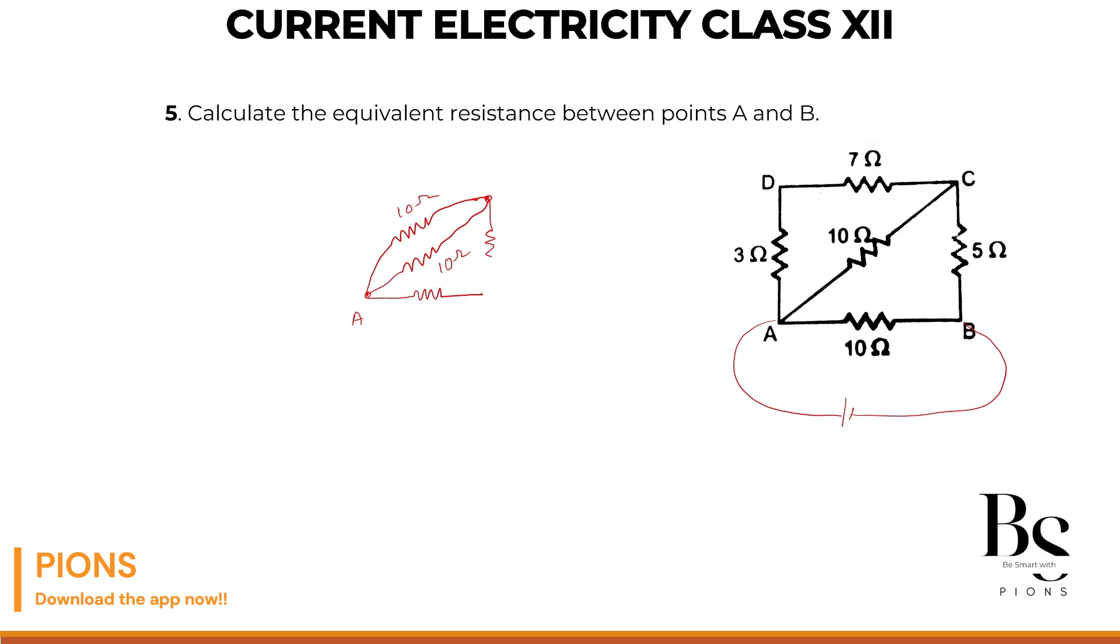Let's forget about the other resistances for a minute. So this is our B, this is 5 ohm and this is 10 ohm. Now this 10 and this 10, they both are in parallel. So what will be R equivalent of that? 10 into 10 whole divided by 10 plus 10, right?